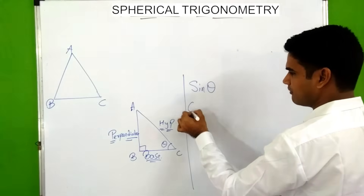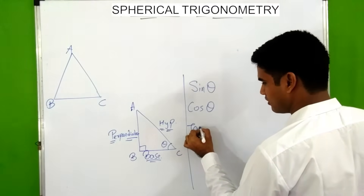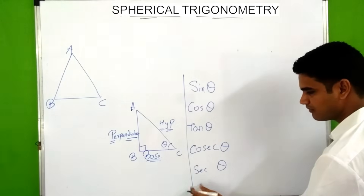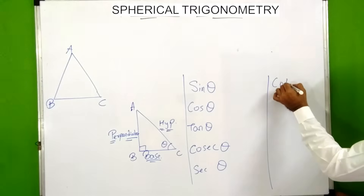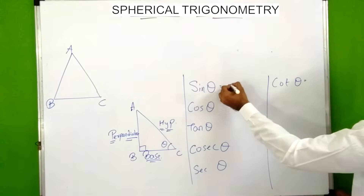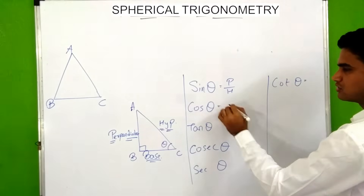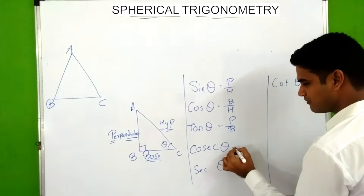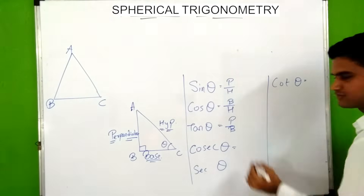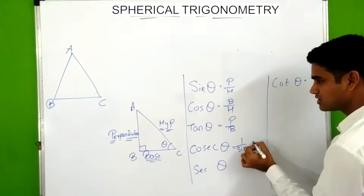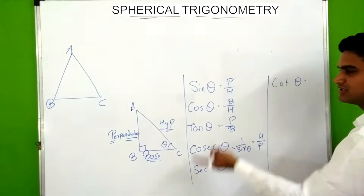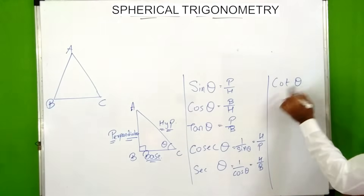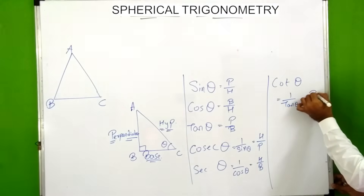There are six trigonometric ratios: sine theta, cos theta, tan theta, cosec theta, sec theta, and cot theta. Sine theta is perpendicular upon hypotenuse, cos theta is base upon hypotenuse, tan theta is perpendicular upon base. Cosec theta is the inverse of sine theta, so it is hypotenuse upon perpendicular. Sec theta is the inverse of cos theta, so it is hypotenuse upon base. Cot theta is the inverse of tan theta, so it is base upon perpendicular.